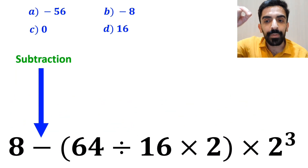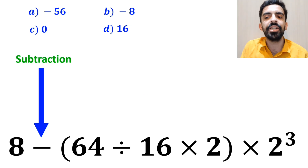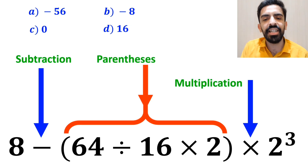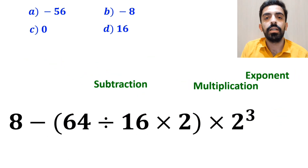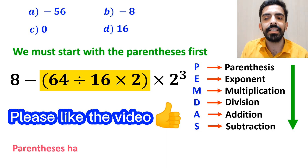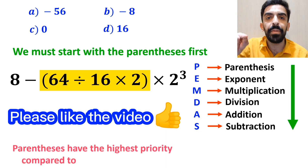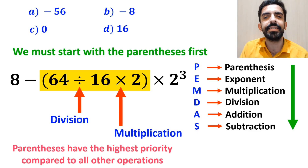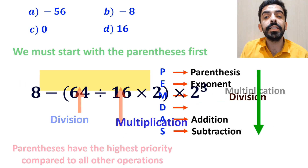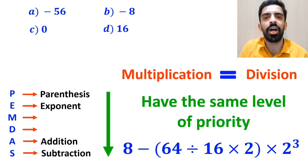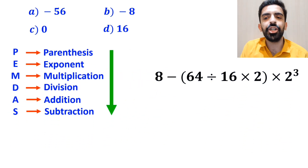As you can see in the image, in this expression first we have a subtraction sign, then parentheses, after that a multiplication sign, and finally an exponent. So we must start with the parentheses first because parentheses have the highest priority compared to all other operations. Inside the parentheses, first we have a division sign and then a multiplication sign.